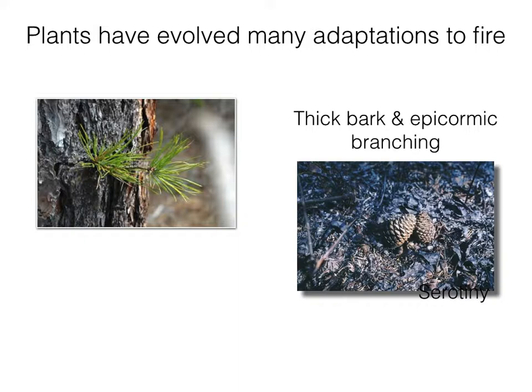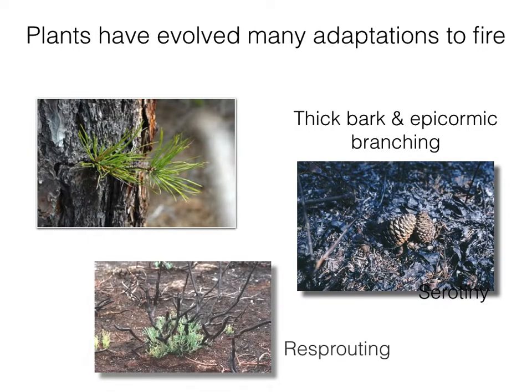In areas with a regular fire history, you tend to find an increase in the number of tree species that produce serotinous cones. Another adaptation is resprouting. This is a photo of chamise, a characteristic chaparral species, which you can see resprouting from the base. Quite a number of species — especially chaparral species like manzanita — produce burls that allow them to withstand the heat of a fire without being completely destroyed, and resprout from the base. This allows quicker reestablishment following a fire.